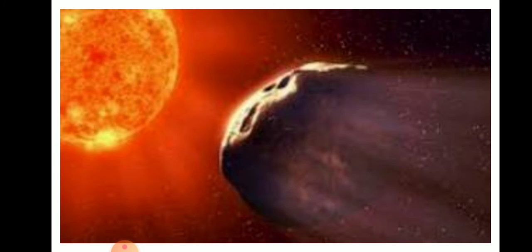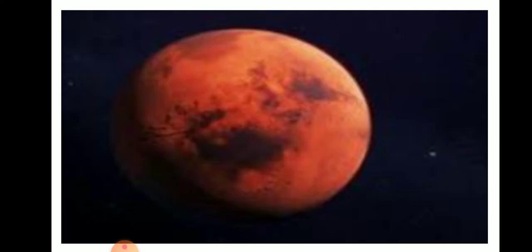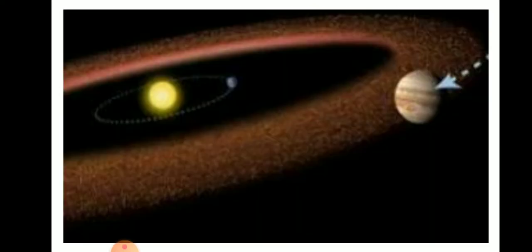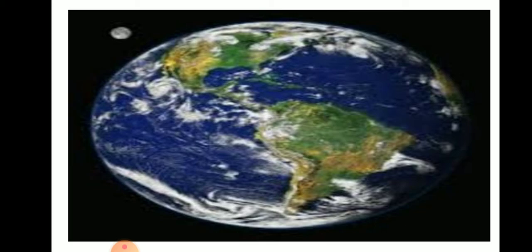Let us now discuss about asteroids. Asteroids are small rocky bodies which move around the sun. Asteroids are mostly found between Mars and Jupiter. This area is called the asteroid belt, and scientists are of the view that asteroids are parts of a planet which exploded many years back.